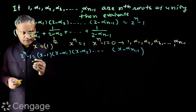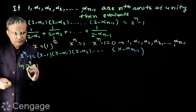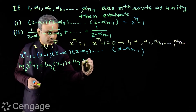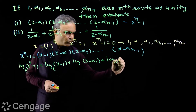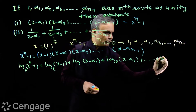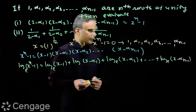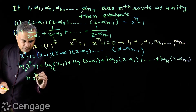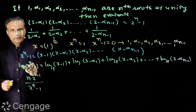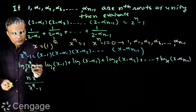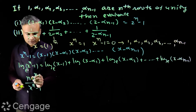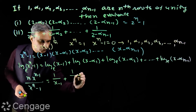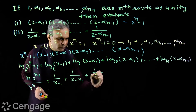Taking logarithm on both sides of x^n - 1 = (x - 1)(x - α₁)...(x - αₙ₋₁), we get: log(x^n - 1) = log(x - 1) + log(x - α₁) + log(x - α₂) + ... + log(x - αₙ₋₁). Differentiating both sides with respect to x: n·x^(n-1)/(x^n - 1) = 1/(x - 1) + 1/(x - α₁) + 1/(x - α₂) + ... + 1/(x - αₙ₋₁).